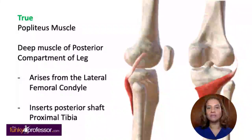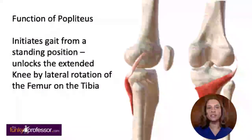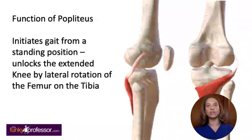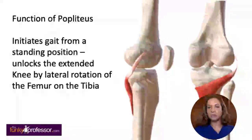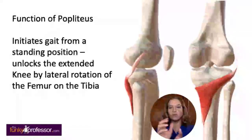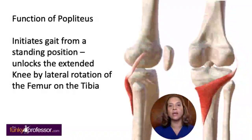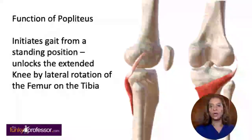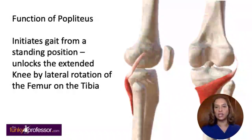The popliteus muscle plays a role in initiating gait. When standing, it unlocks the extended knee — if this muscle were to contract and shorten, it would externally rotate the femur on the tibia, helping to initiate gait.